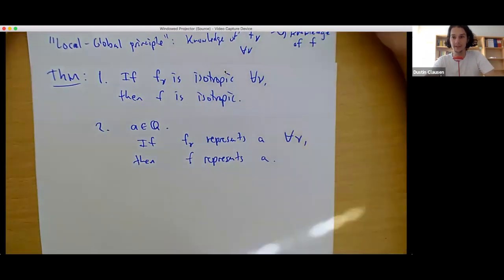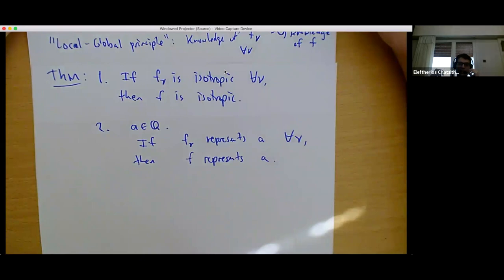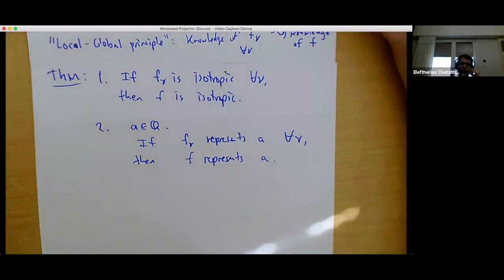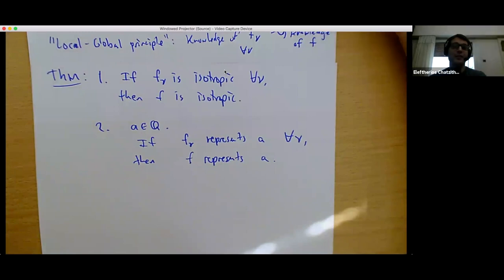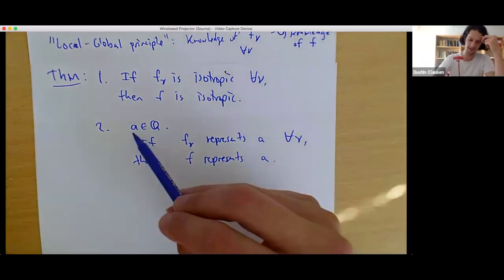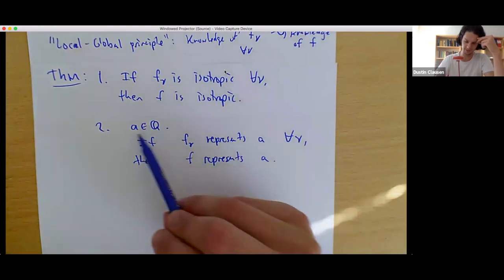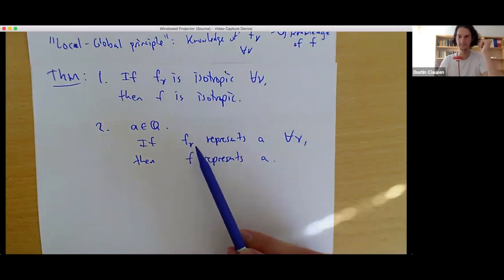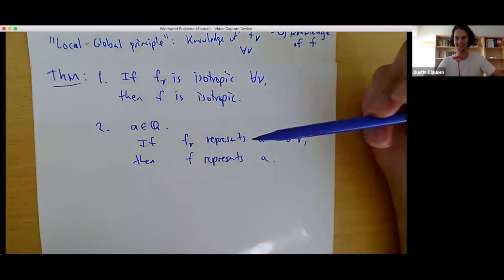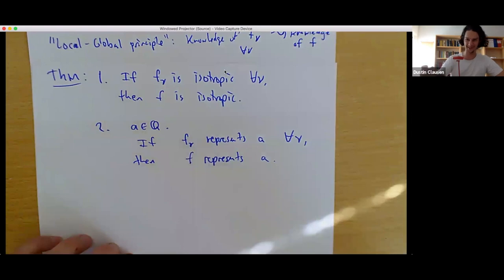Instead of asking just about the zero sets of your polynomial, you ask about the level sets. There's a subtlety: we cannot get form one from form two because when we say 'represent,' we also allow the zero vector to represent something. So form one would not follow from form two applied with A equal to zero, because 'represents' doesn't include the condition that it's a non-trivial zero. In fact, what we're going to see is that one implies two — that's the correct implication — but you have to change the form.